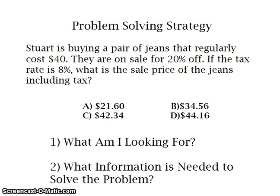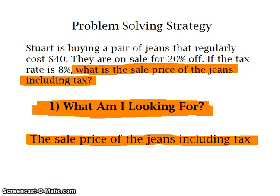For my problem-solving strategy, I will need to find two things: what I am looking for, and also what information is needed to solve the problem. I am looking for the sale price of the jeans including tax. Most times when you are looking for what the problem is asking you to solve, it is most times followed by a question mark. So you find that question mark — whatever sentence is before it, that is what you are looking for.